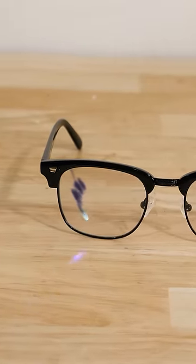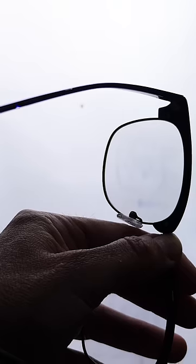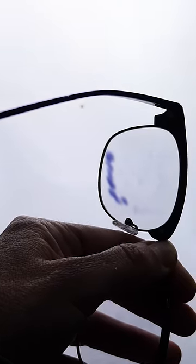This is photochromic glass. When you shine UV light on the glass, it darkens it. This happens because the glass has silver chloride crystals mixed in with it.